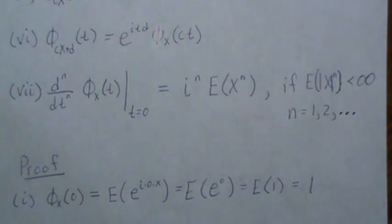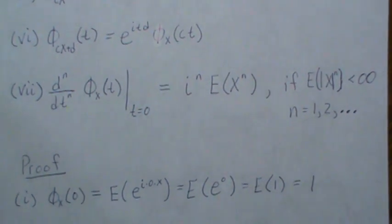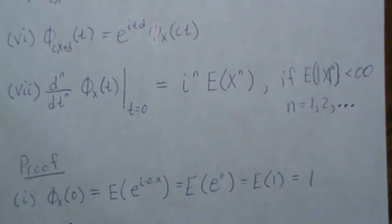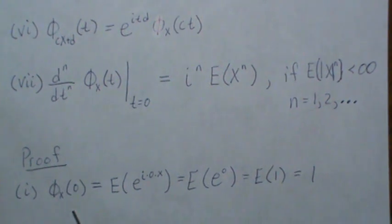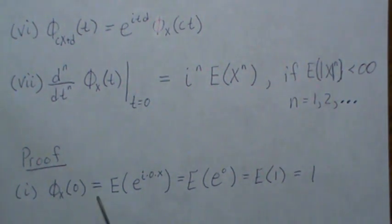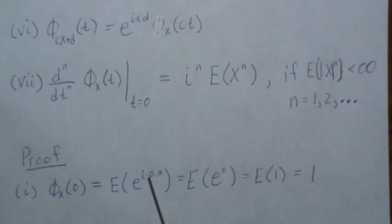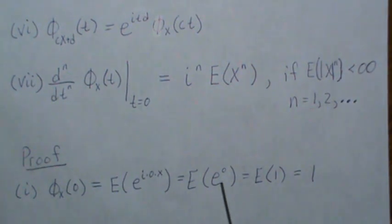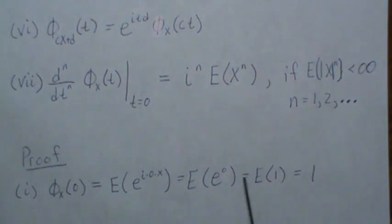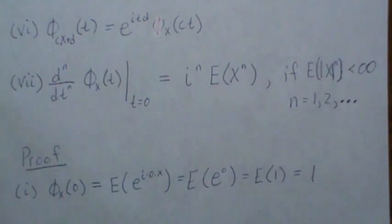Some of these proofs are simple, some are more complicated. For property one, you plug in zero for t: e raised to zero is one, and E[1] = 1.